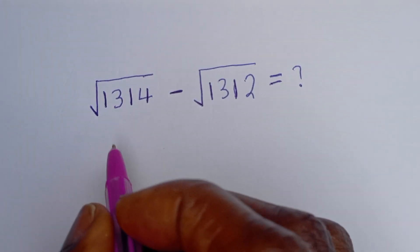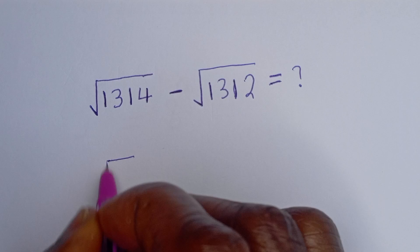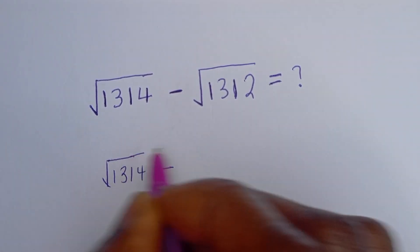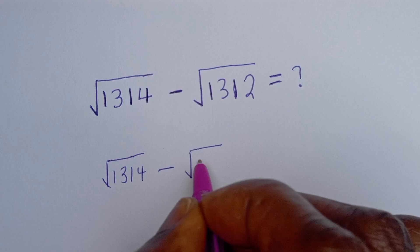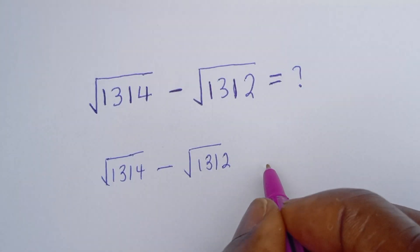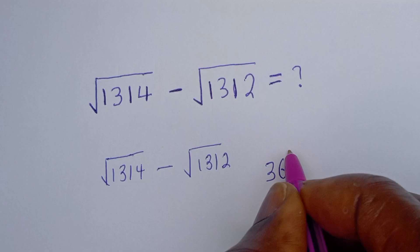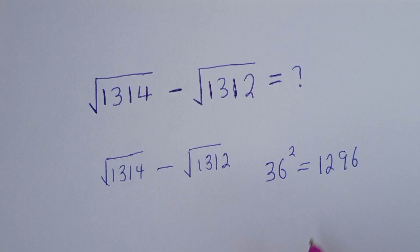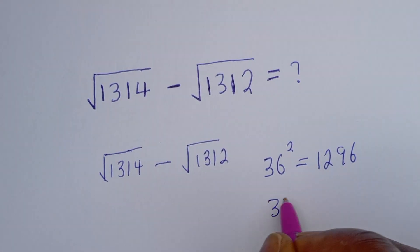Now we have the square root of 1314 minus square root of 1312. Then if you have 36 squared, this is equal to 1296. Also, if you have 37 squared, this is equal to 1369.